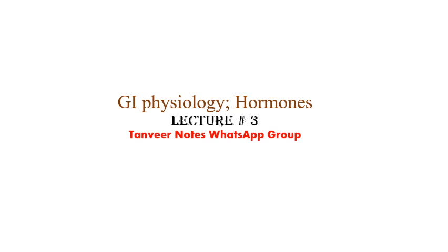Today is our third lecture in gastrointestinal physiology and we are specifically discussing the hormones. We previously discussed that we have three types of hormones: first, endocrine hormones, which are of two types — official and candidate. The second type is paracrine, and the third type is neurocrine.